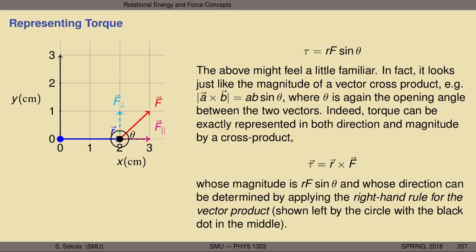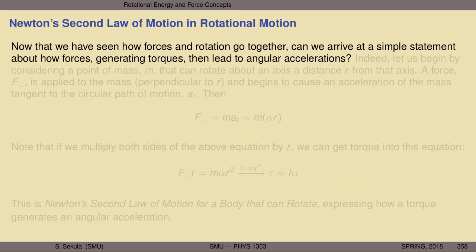Torque is also a vector resulting from a vector cross product — the cross product of the direction from the hinges where the force is applied and the force itself. So tau (the symbol for torque) is a vector: τ = r × F. Its magnitude is rF sinθ, and its direction is determined by applying the right-hand rule for the vector product. Point your index finger in the direction of r, middle finger in the direction of F, and your thumb indicates the direction of torque — here pointing up and out of the screen, represented as a circle with a dot.